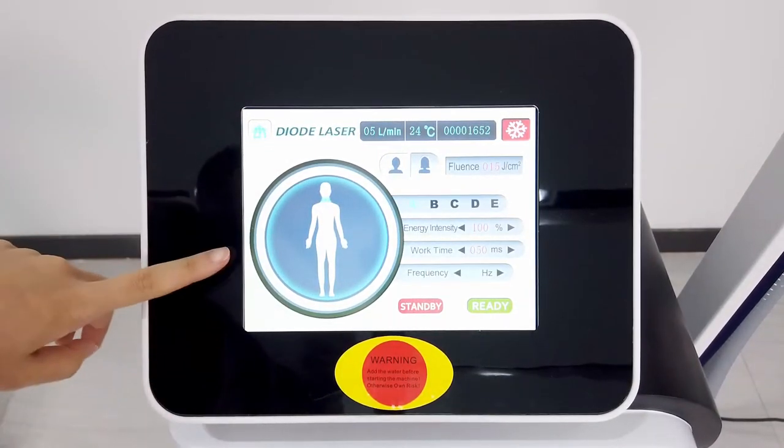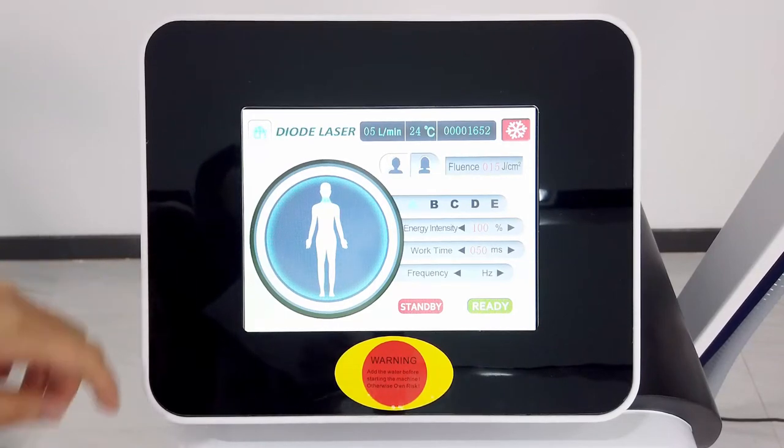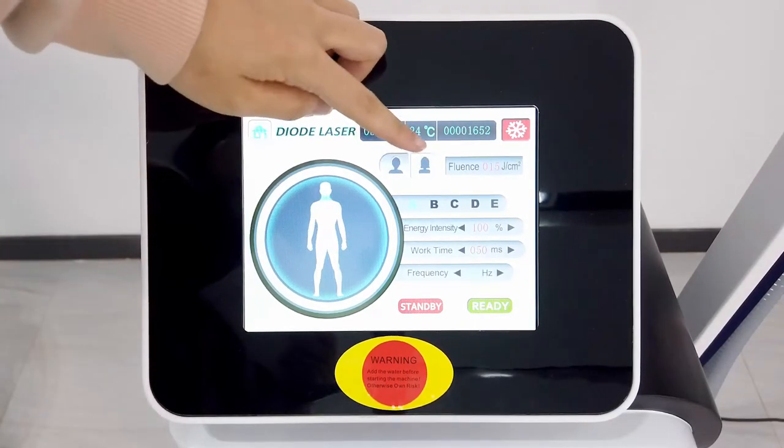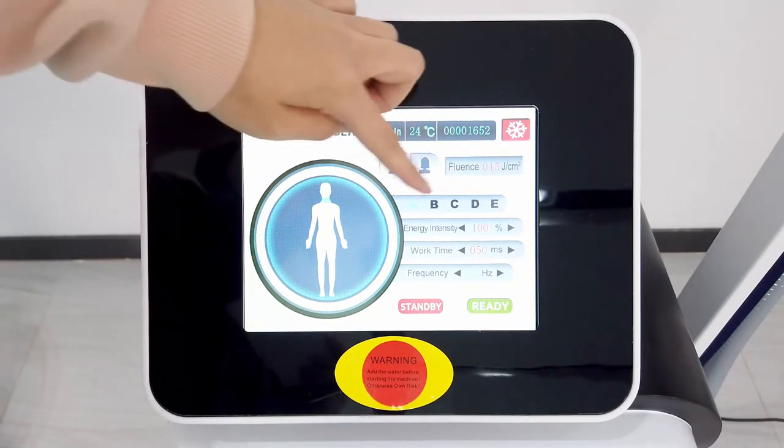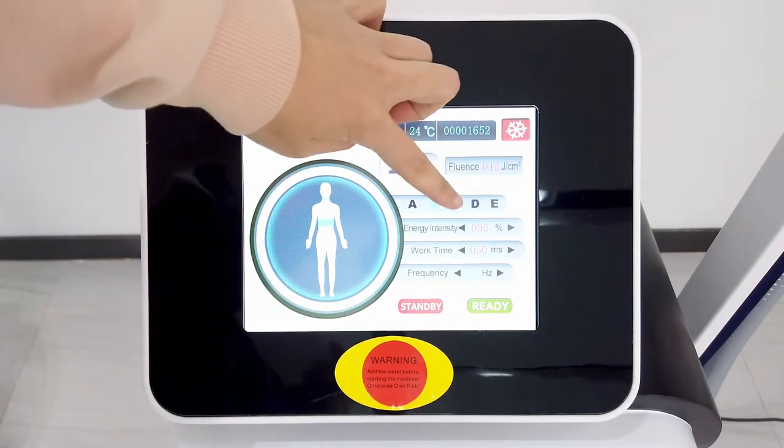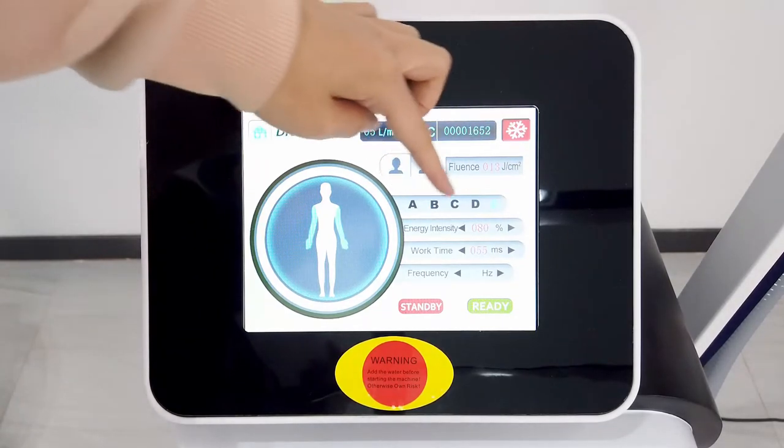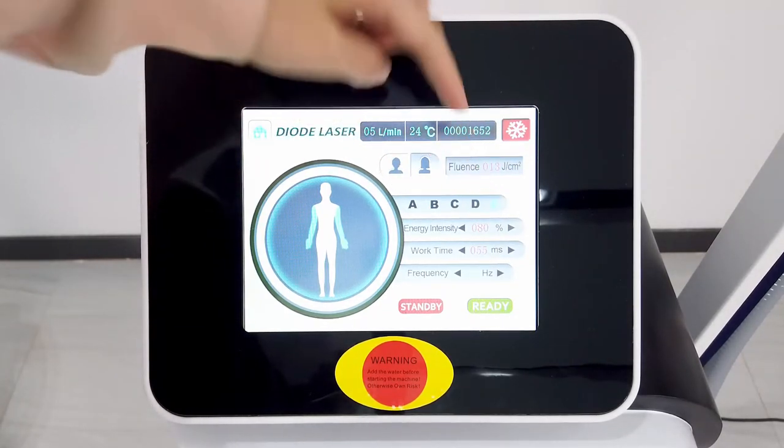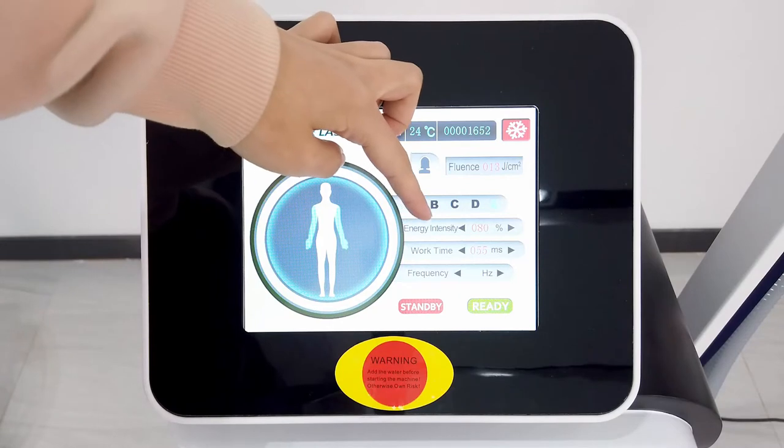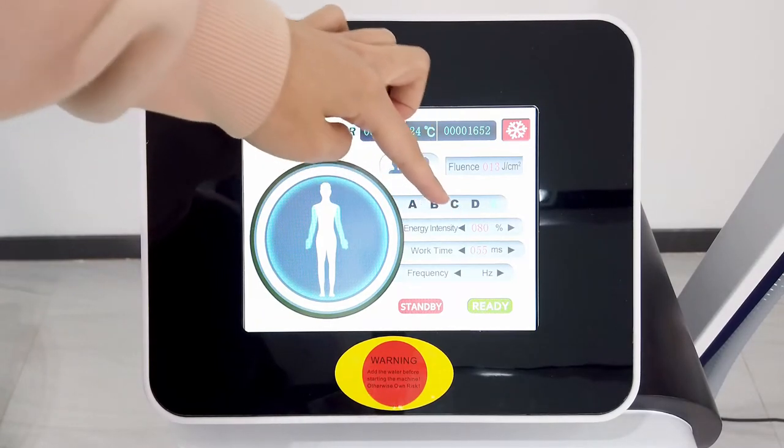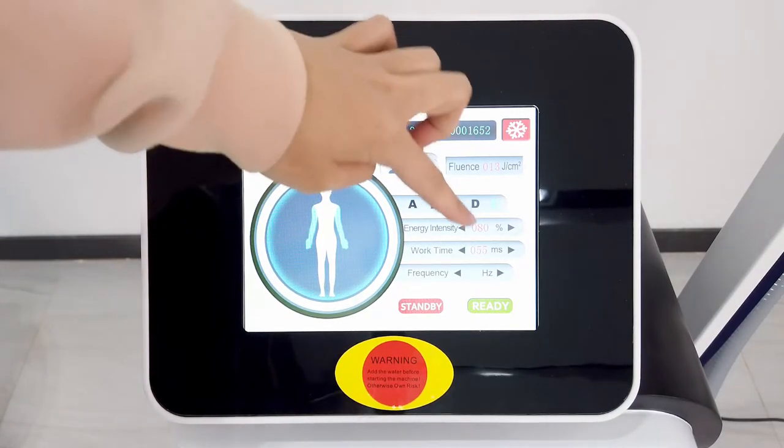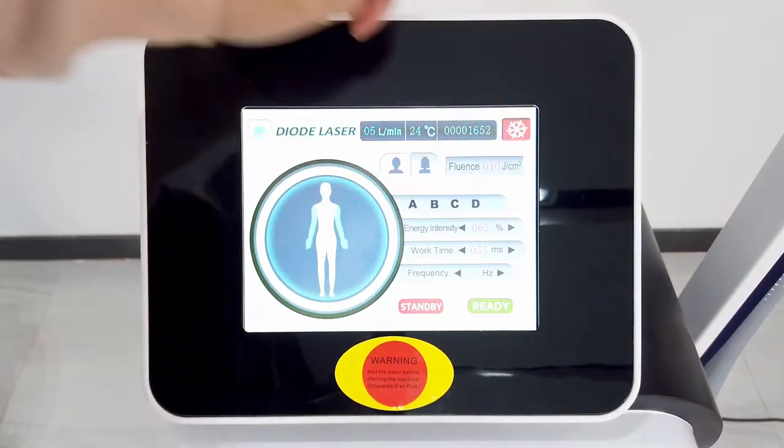Here is the system interface. It has two modes, men and women, and here are the body parts: face, neck, body, hip, leg, and arm. We can choose one according to our needs. And here is the energy intensity. We can set it to 65% first.